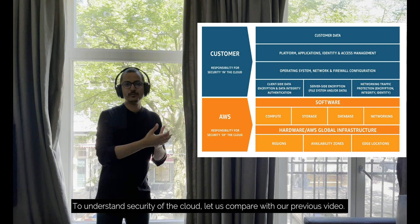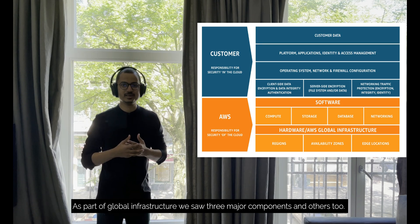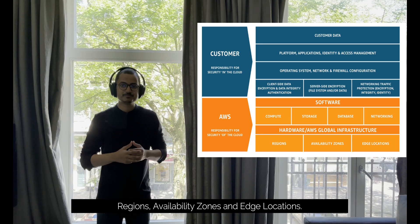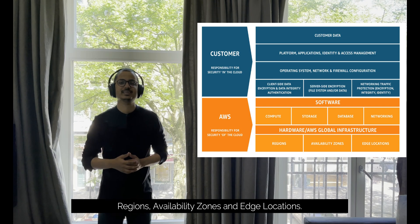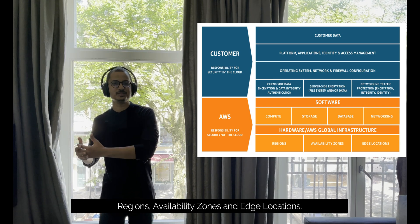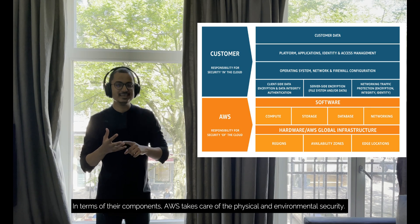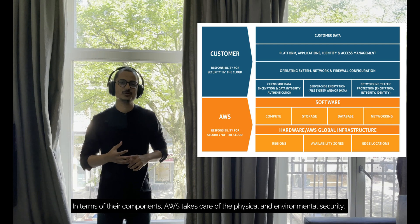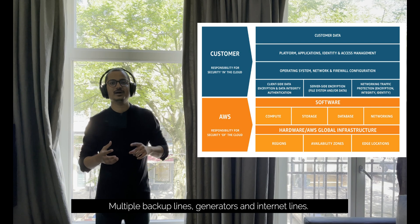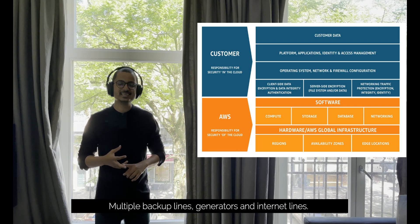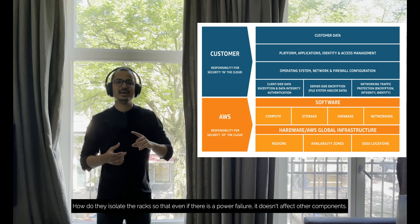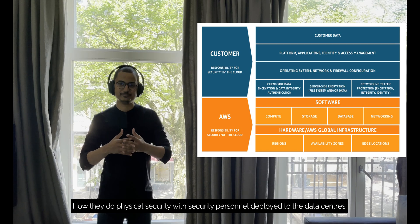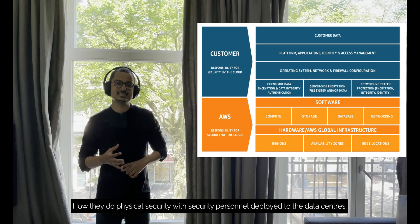We will talk about three major components: regions, availability zones, and edge locations. In terms of physical and environmental security, AWS provides multiple backup power lines, multiple generators, and multiple internet lines into their data centers, with multiple redundancies to handle power failures.